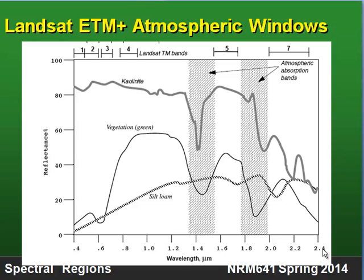In the Landsat sensor there are two bands from the shortwave infrared spectral region. Band 5 covers one range of wavelengths and band 7 covers another range. So basically band 4 is the near infrared spectral region, band 5 is the shortwave infrared spectral region, and band 7 is another shortwave infrared spectral region.